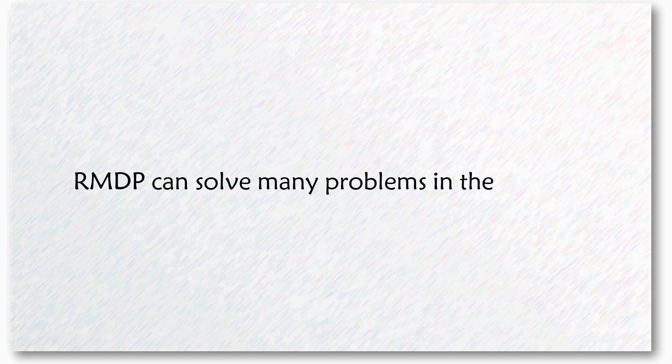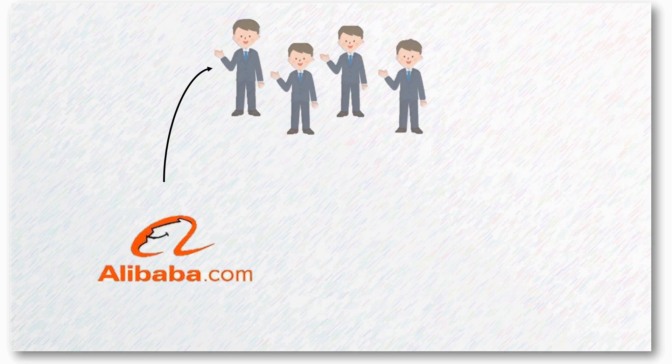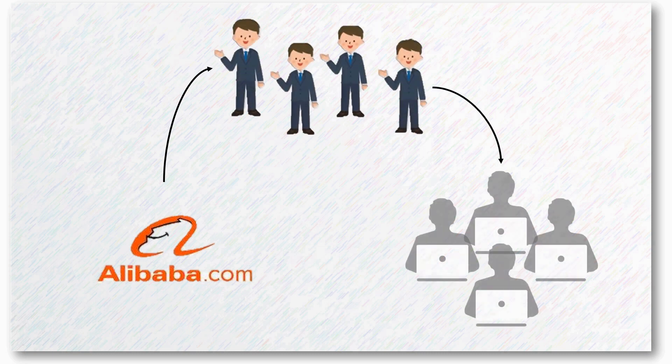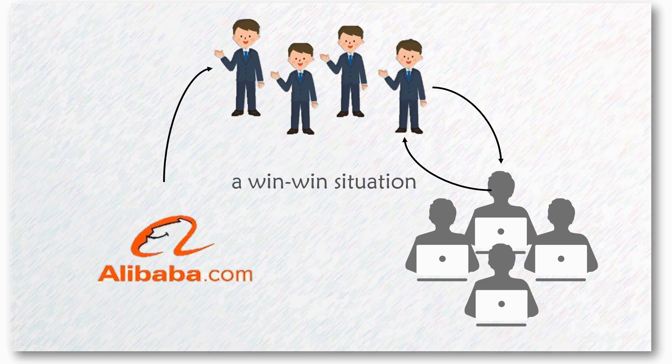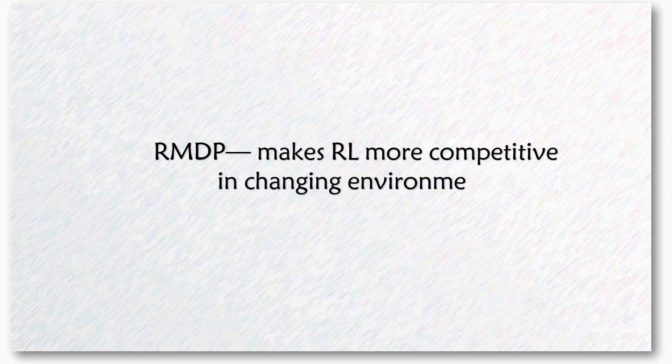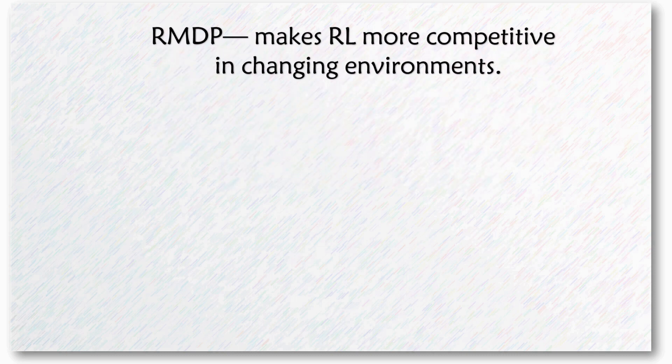RMDP can solve many problems in the real world. Alibaba is using it for helping its advertisers acquire their matched users. With this technique, users and advertisers achieve a win-win situation. In general, RMDP makes RL more competitive in changing environments.